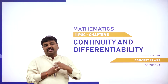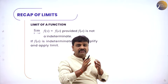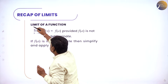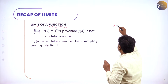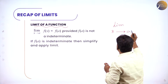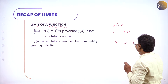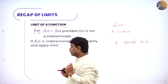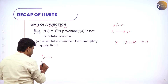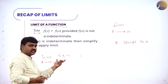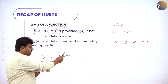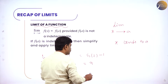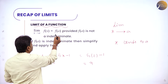Now let us recollect what is a limit. You studied in your first year PUC how to read this: limit x tends to a. We'll read this as limit x tends to a f of x, which means in the place of x we put a, so we get f of a. For example, limit x tends to 2 of 5x minus 1: in the place of x put 2, so 5 into 2 minus 1 gives 10 minus 1 equals 9. So limit x tends to a f of x means in the place of x put a, you'll get f of a.